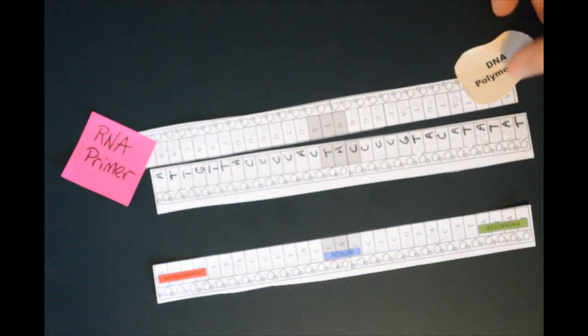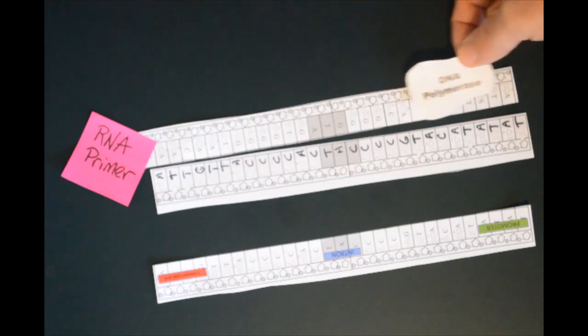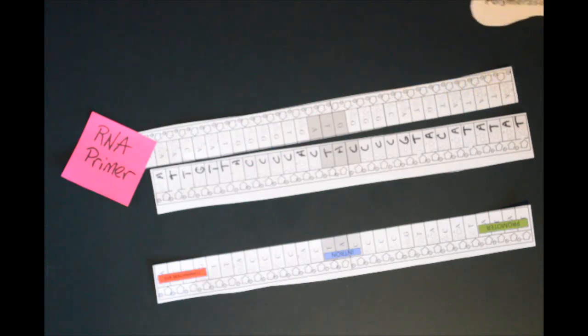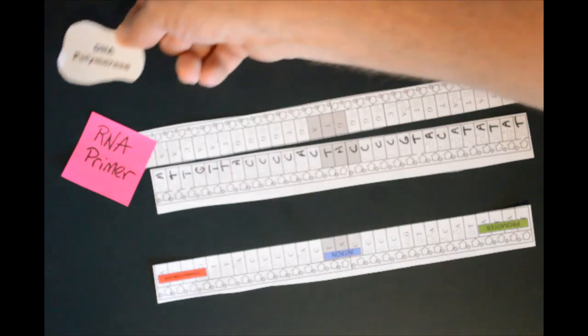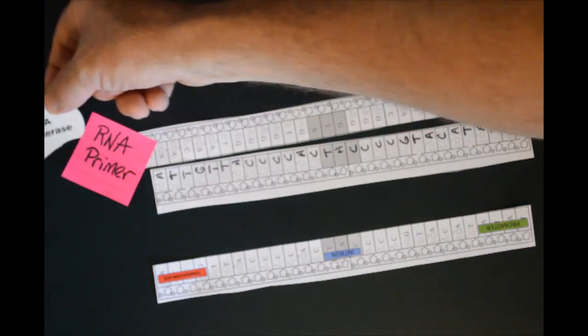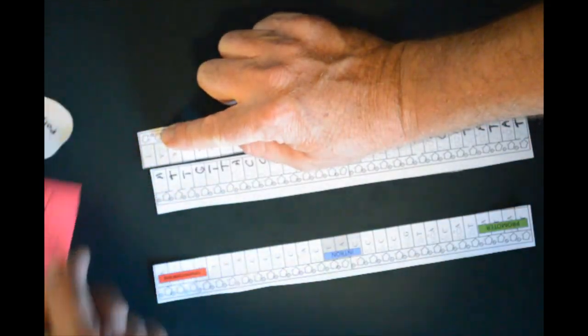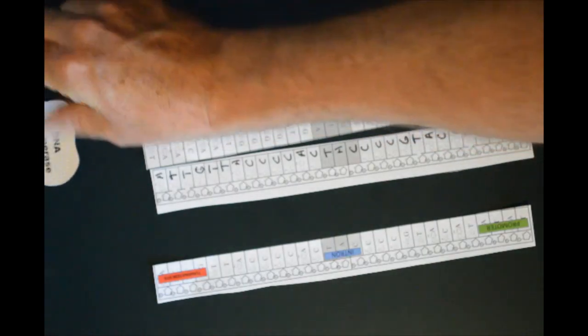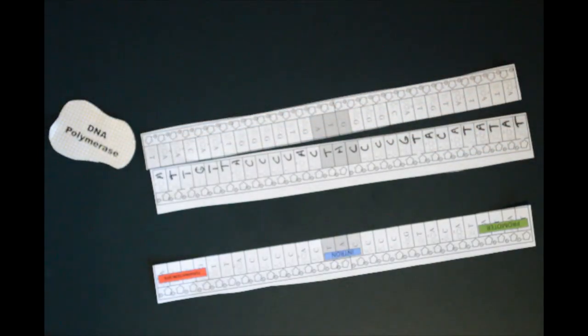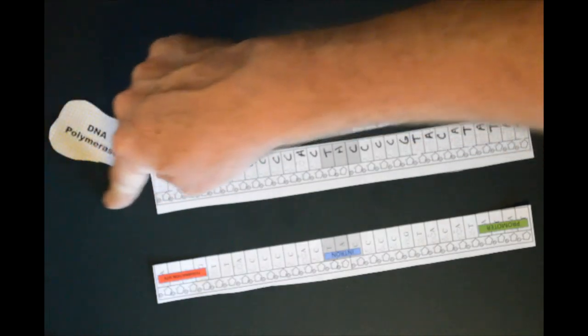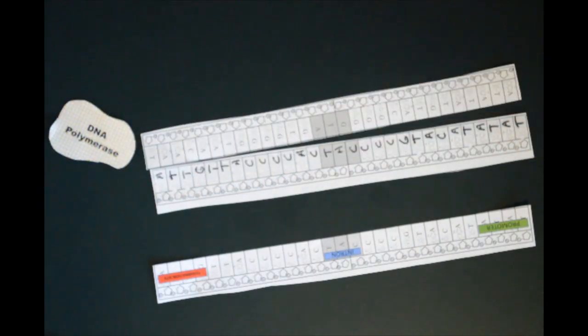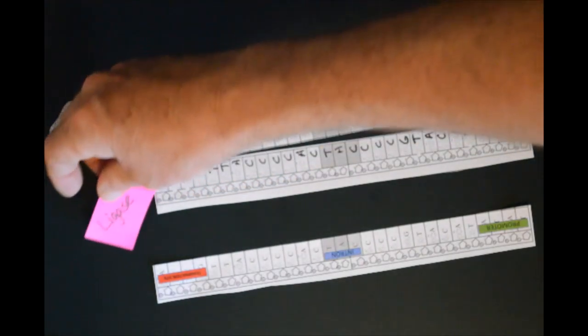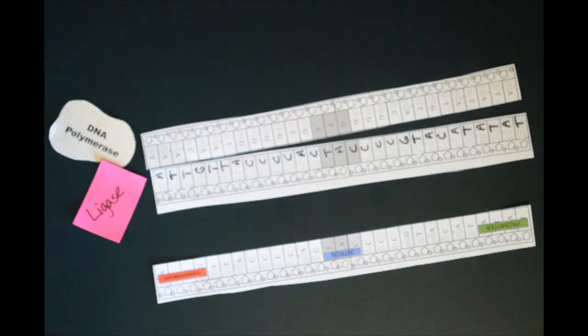So in prokaryotes, this DNA polymerase would make its loop around the entire circular chromosome and come back to the beginning, kick out the RNA primer, and we would need to then stitch back together, if you can imagine in another strand, the two pieces of DNA. So we need to bring in an enzyme called ligase for that to stitch them together.